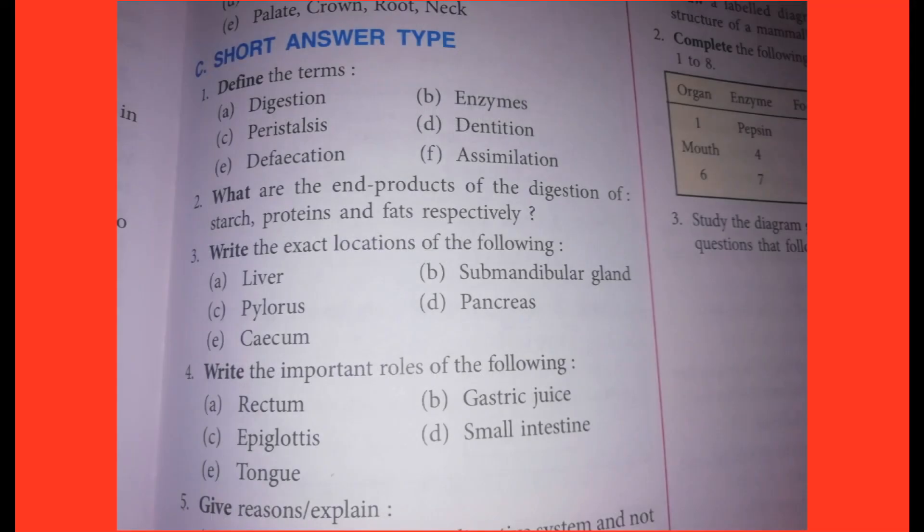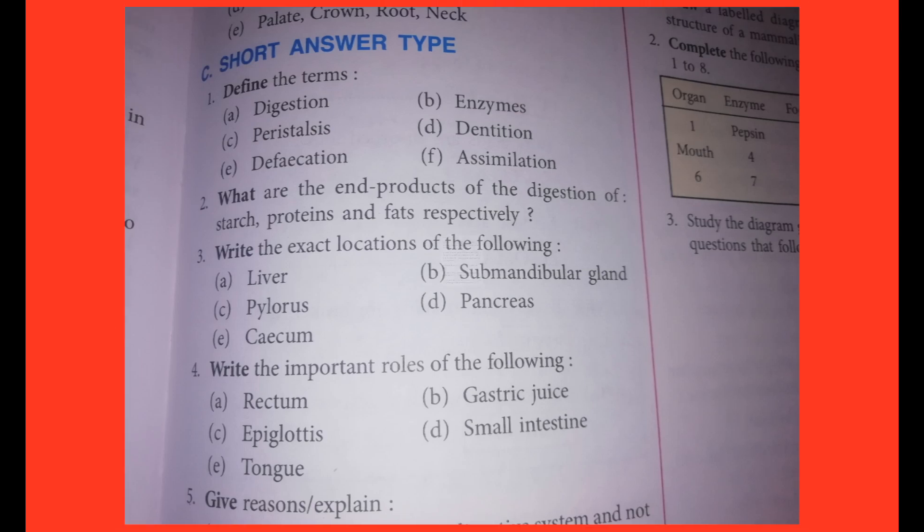Fourth one: Write the important roles of the following. A: Rectum. B: Gastric juice. C: Epiglottis. D: Small intestine. E: Tongue. Answers showing on screen.